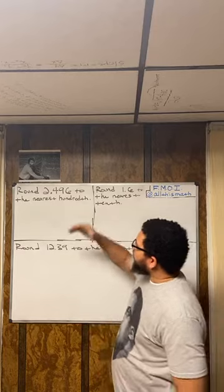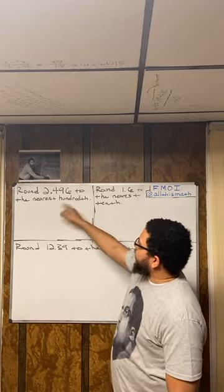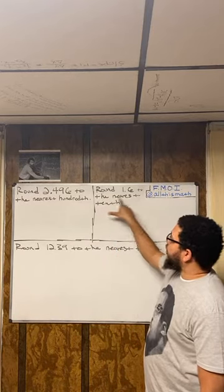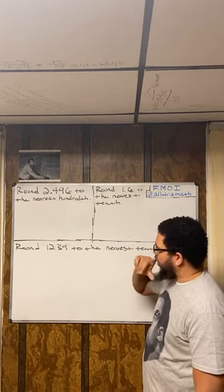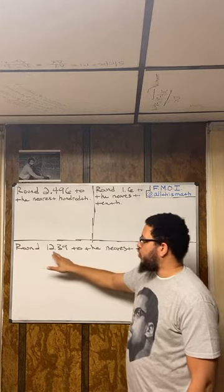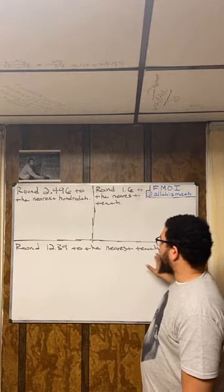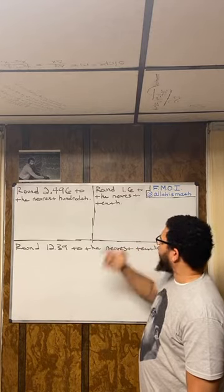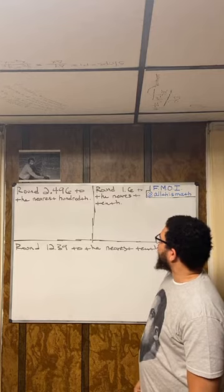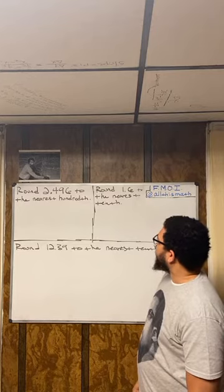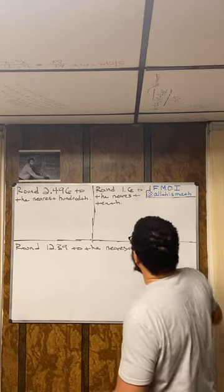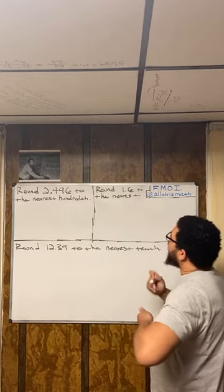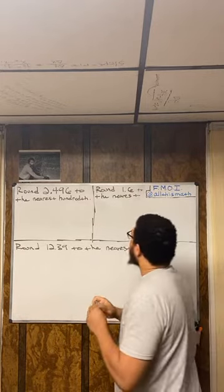We have three examples. Round 2.496 to the nearest hundredth. Then over here, round 1.6 — wait, I wrote that wrong. This should say: round 1.6 to the nearest whole number.